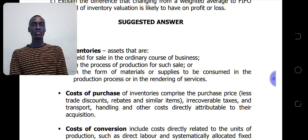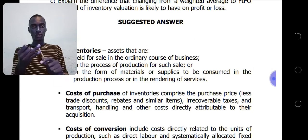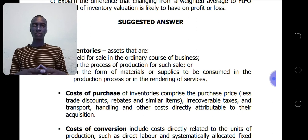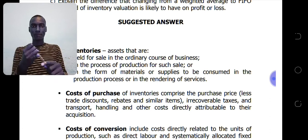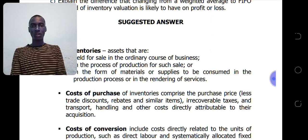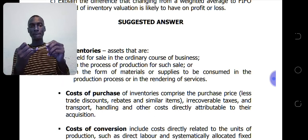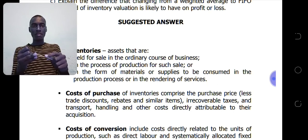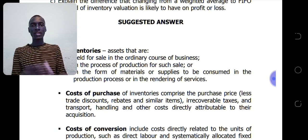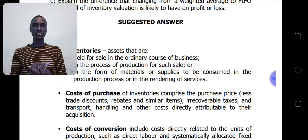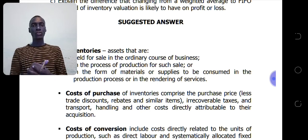The cost of inventories consists of the cost of purchase, costs of conversion, and other costs incurred to bring the inventories to their present location and condition. When we talk about cost of purchase, we are talking about the purchase price less trade discounts, rebates, and similar items, plus irrecoverable taxes, transport, handling, and other costs directly attributable to the acquisition of the inventories.